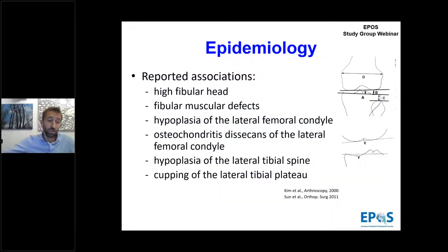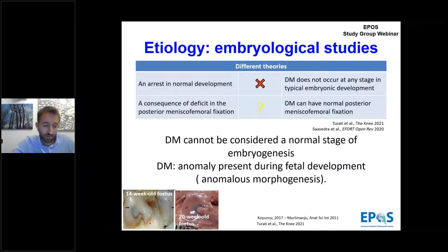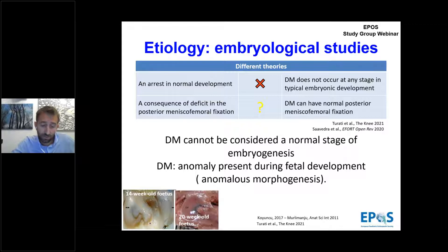There are also anatomical characteristics strongly associated with discoid meniscus, such as the high fibular head or hypoplasia of the lateral femoral condyle. A defined etiology of discoid meniscus is still debated. Smillie in 1948 stated that discoid meniscus resulted from a resorption failure of the center of the cartilage plate during fetal development. However, different fetal studies show a normal meniscal shape in prenatal knees.